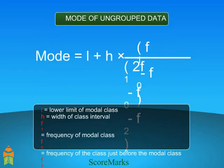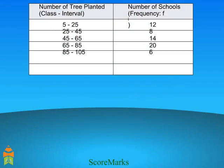Where L is equal to lower limit of modal class, H is equal to width of class interval, F1 is equal to frequency of modal class, F0 is equal to frequency of the class just above the modal class, and F2 is equal to frequency of the class just after the modal class. Find the mode of this data.